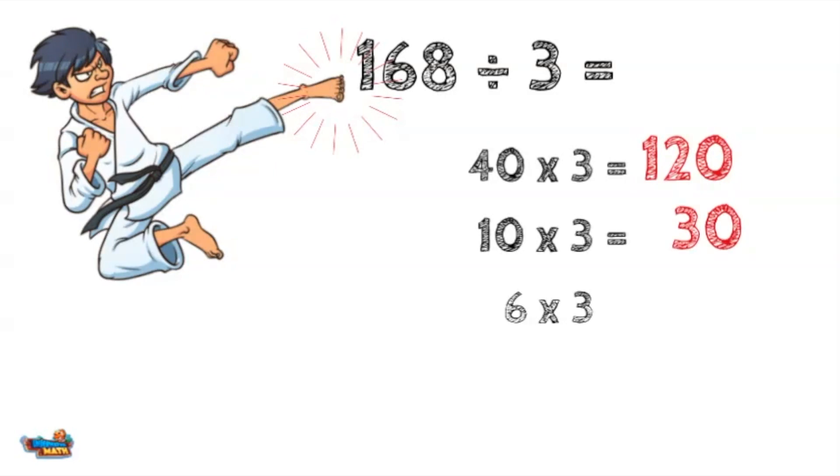6 times 3 equals 18. I add up all the factors multiplied by 3 to find the answer. 40 plus 10 plus 6 equals 56.